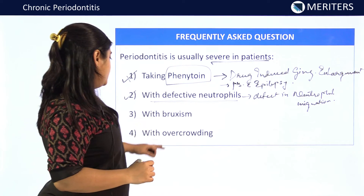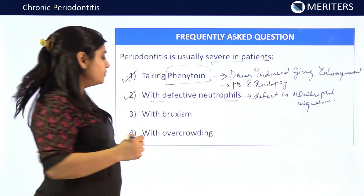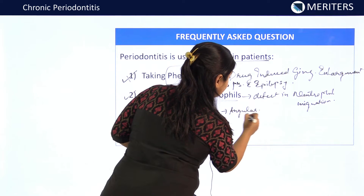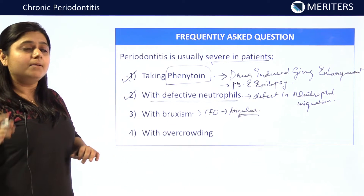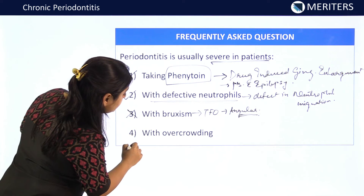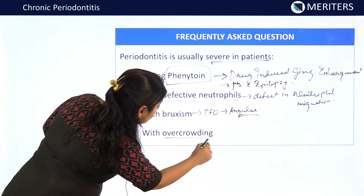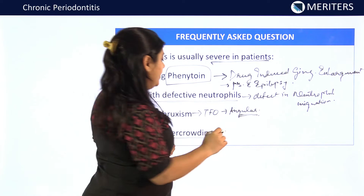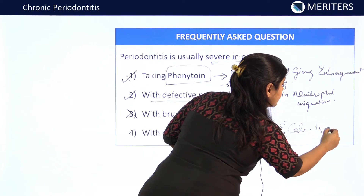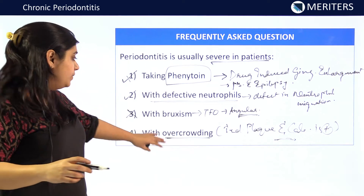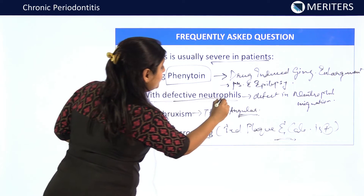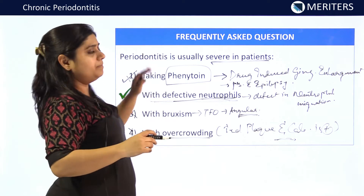Option 3 — patients with bruxism. Patients with bruxism mostly show trauma from occlusion, and the bone loss present is mostly angular; it is not necessary that they always present with periodontitis, so this option is not correct. Option 4 — periodontitis is usually severe in patients with overcrowding. In patients with overcrowding, increased accumulation of plaque and calculus is present, but it is not always necessary that overcrowded teeth result in periodontitis. Therefore, the answer is option 2 — patients with defective neutrophils mostly present with chronic periodontitis.